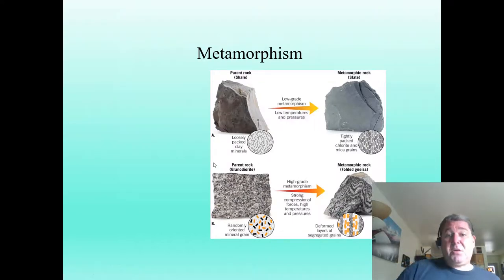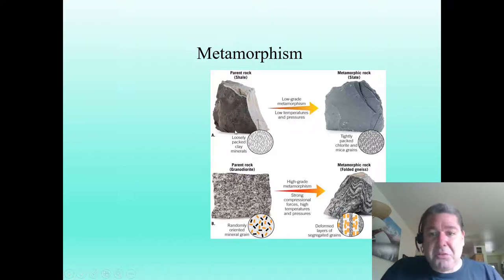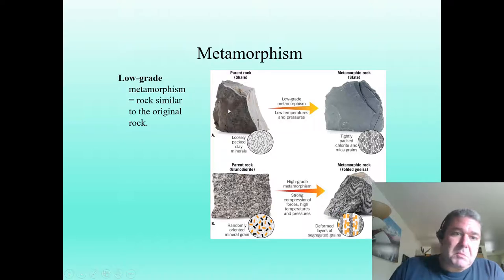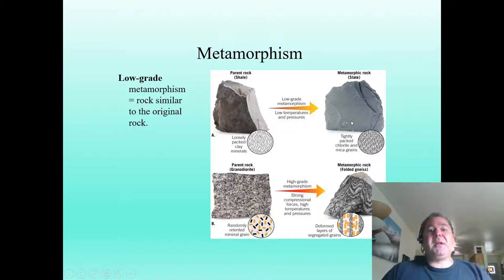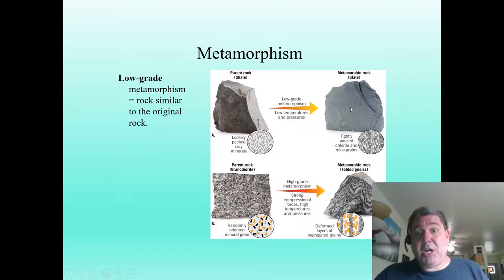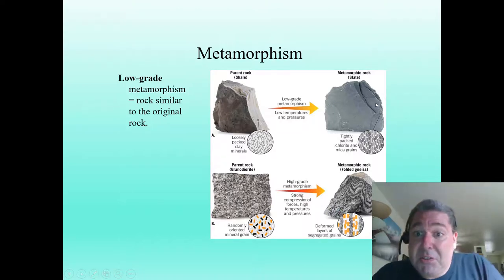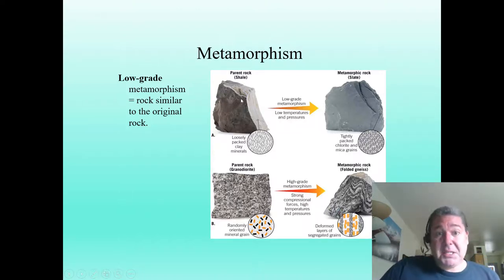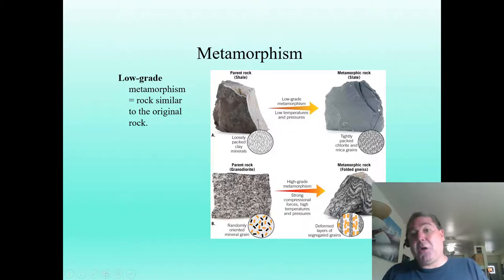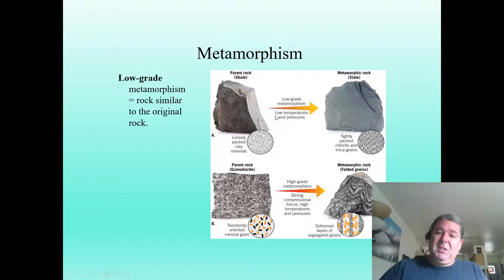Let's start with a classic example using the parent rock shale. In shale, we have loosely packed mineral grains. Under low-grade metamorphism, we get a rock that looks fairly similar to the original. Here we have slate — from old-school chalkboards or pool tables. Slate has very tightly packed, now-aligned mica and mineral grains. It looks a lot like shale, but it's much denser and harder. It will still peel into flat planes like shale — that's its foliation.